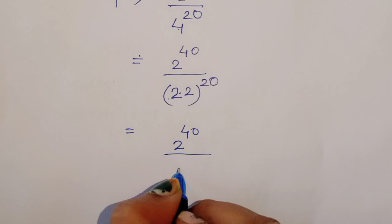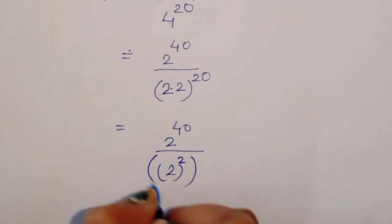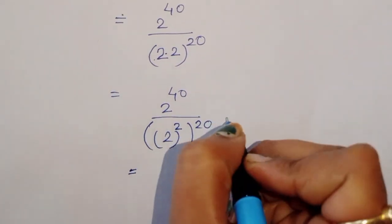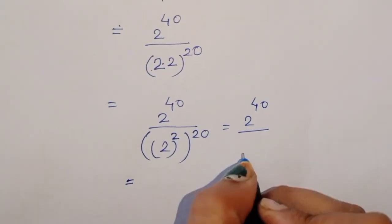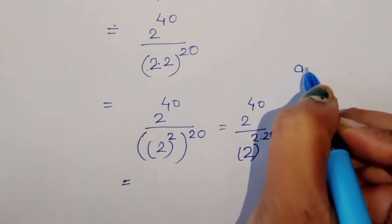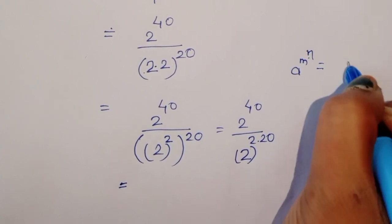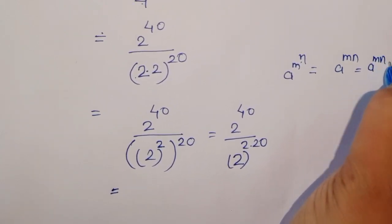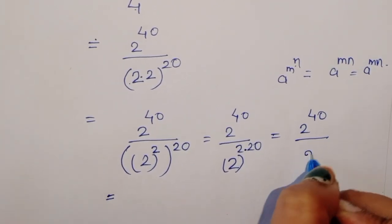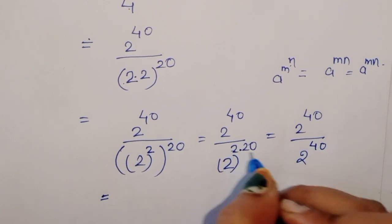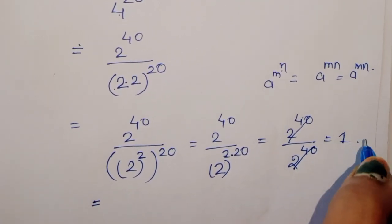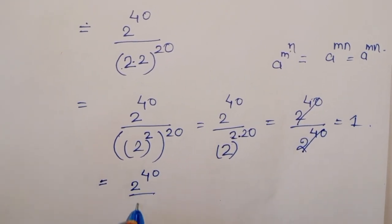We can write the denominator as 2 power (2 times 20) using the formula: a power m power n equals a power (m times n). So 2 power (2 times 20) equals 2 power 40. Therefore, 2 power 40 divided by 2 power 40 equals 1. In this way also, 2 power 40 divided by 4 power 20 equals 1.